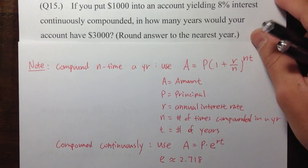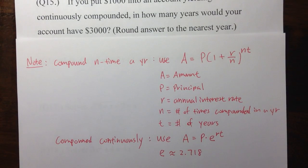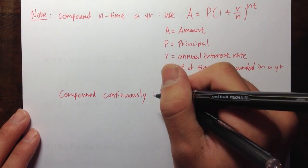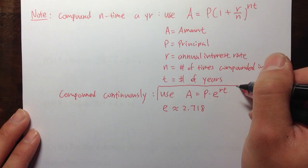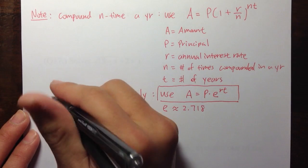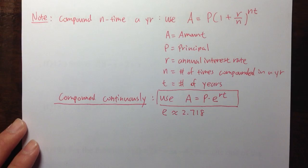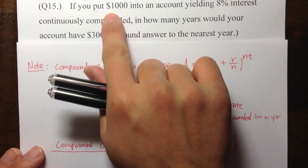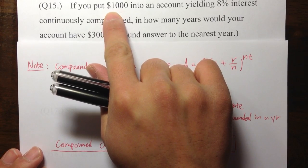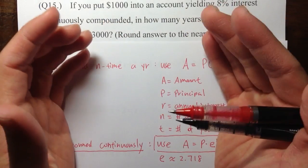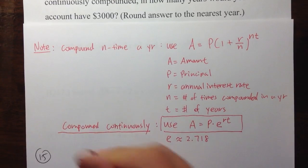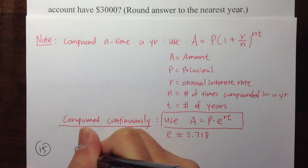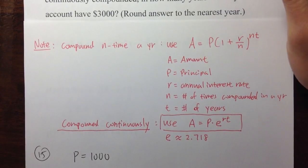In this question we must use the calculator — there is no way to figure out the correct answer without it. This is the formula we are going to use since we are dealing with continuously compounded interest. So, from the problem, we have one thousand dollars at first, meaning the principal P equals one thousand.